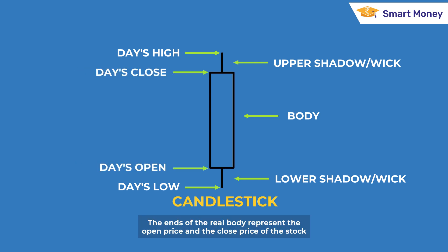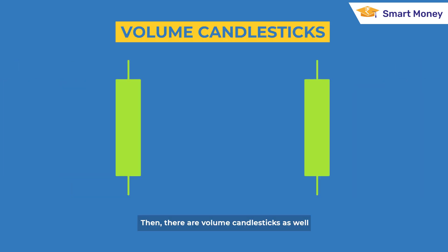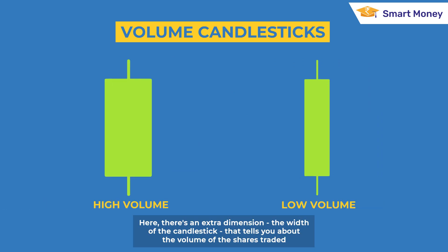The ends of the real body represent the open price and the close price of the stock. If the close price is higher than the open price, the real body is colored in green. If the open price is higher than the close price, the real body is colored in red.